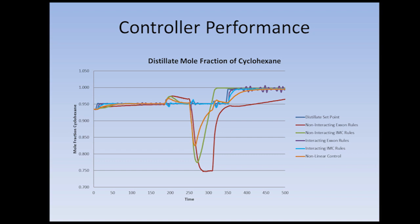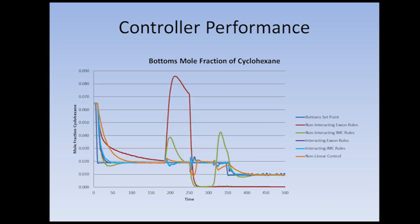To us, it looks like the interacting IMC controls do a little bit better because they don't vary as much as the ExxonMobil controls do. And for the fraction of cyclohexane in the bottoms, it ends up being the same where we have the best controls being done by the interacting IMC controllers.